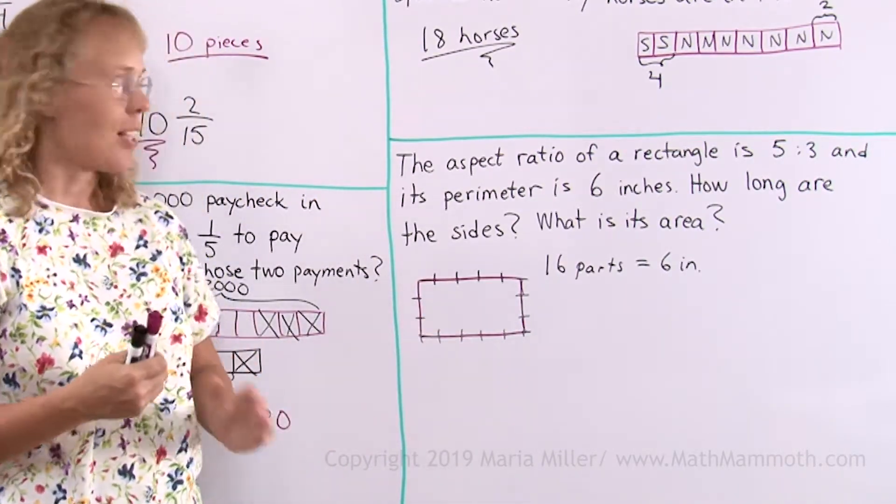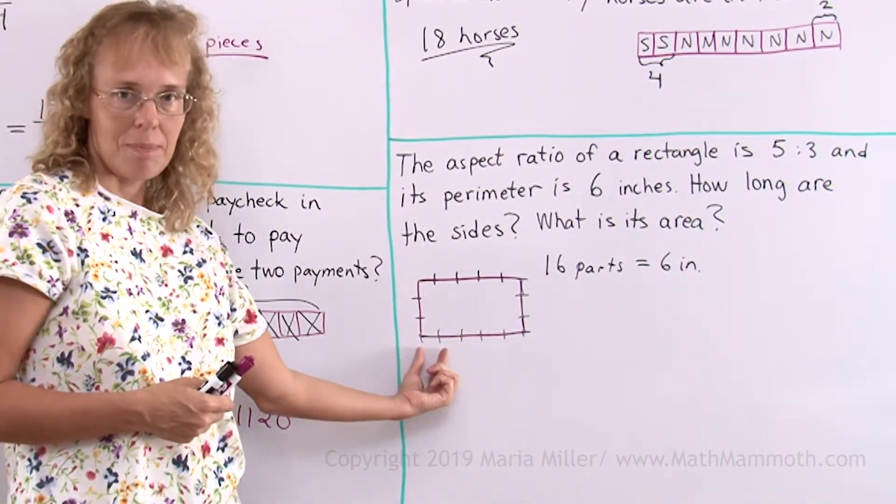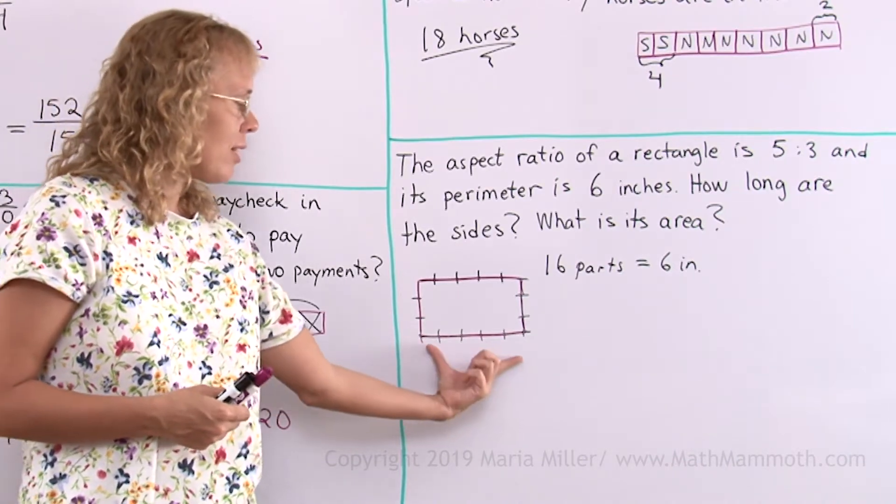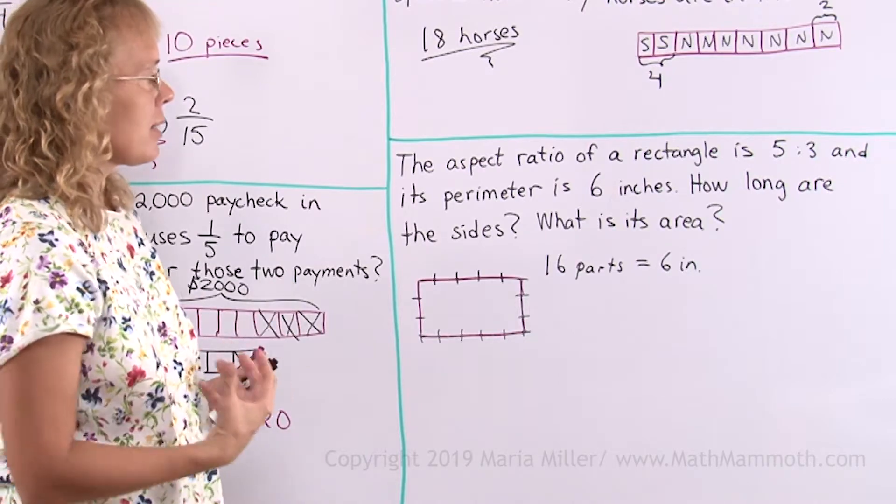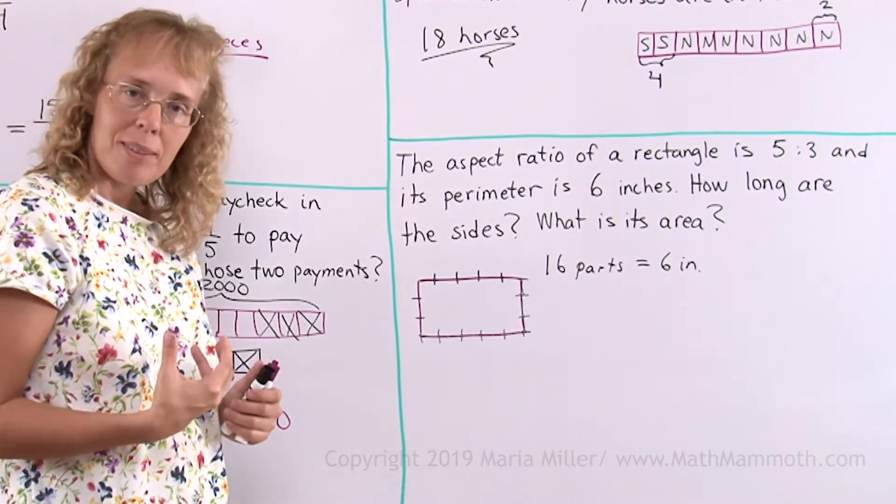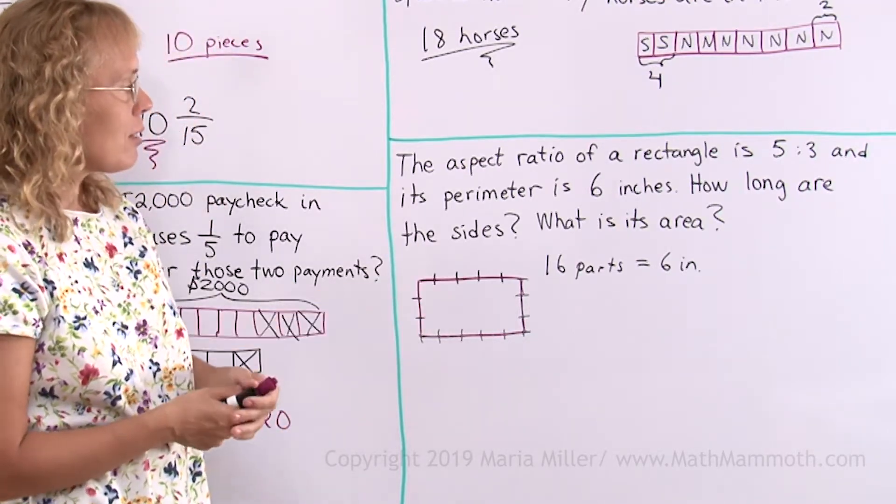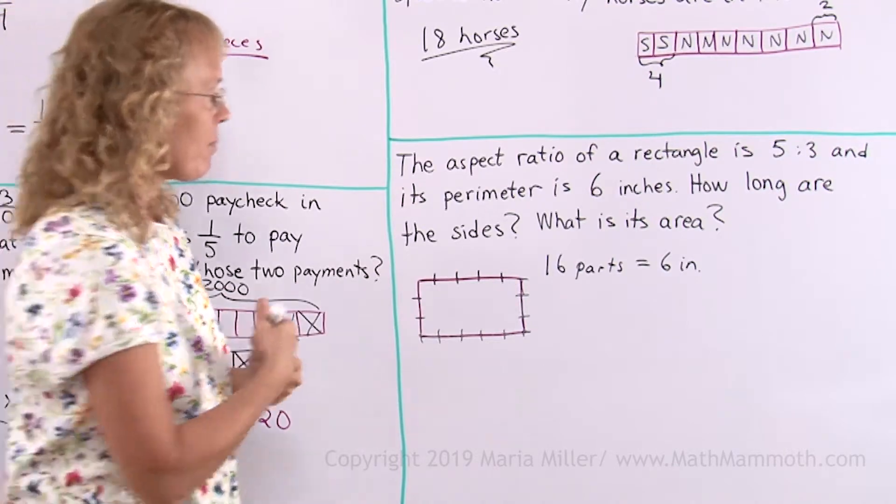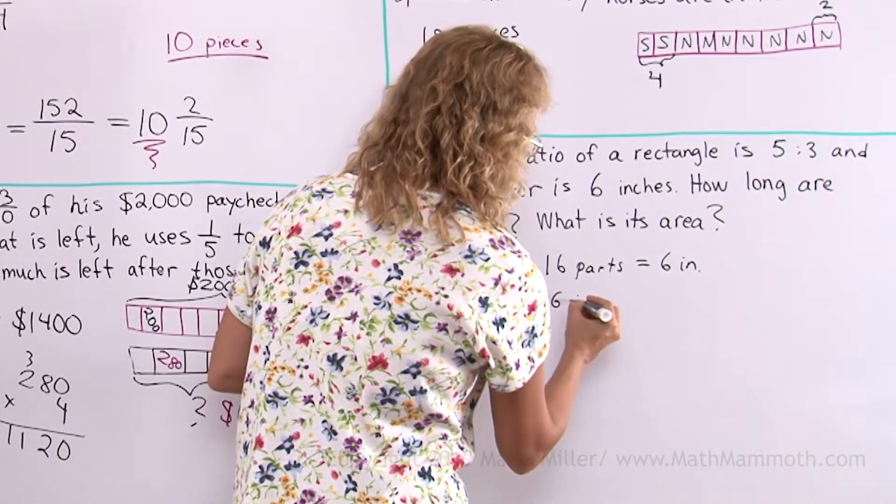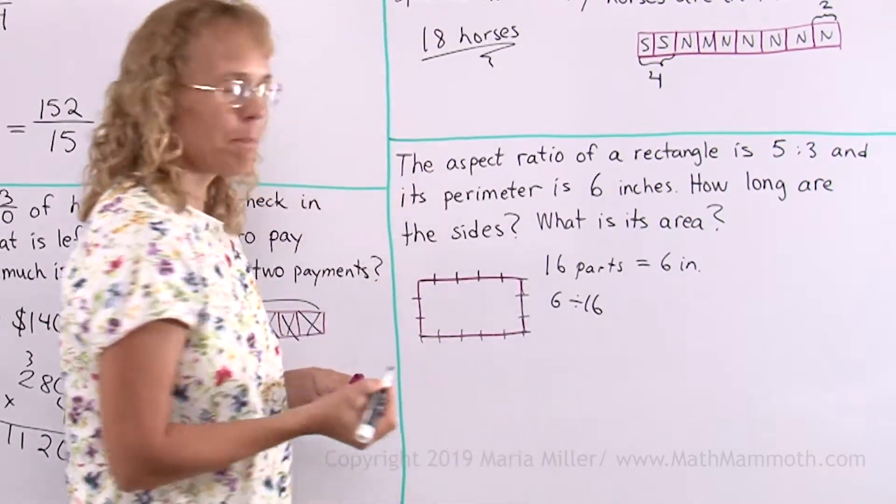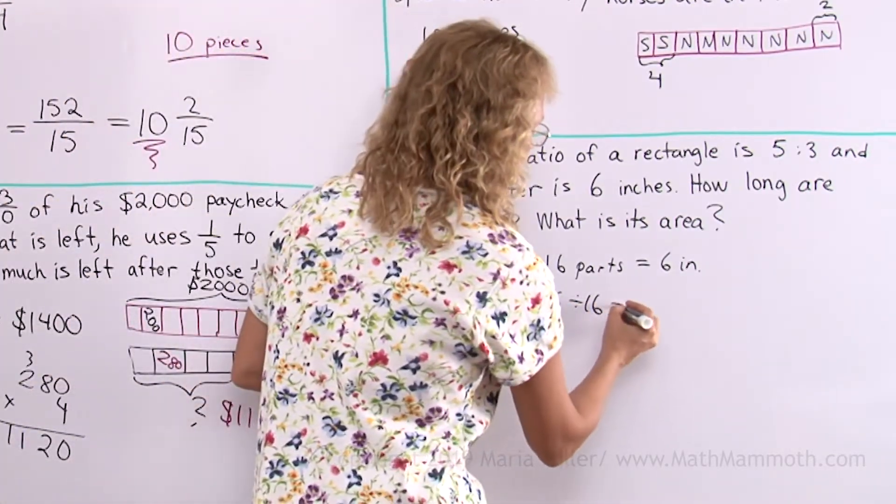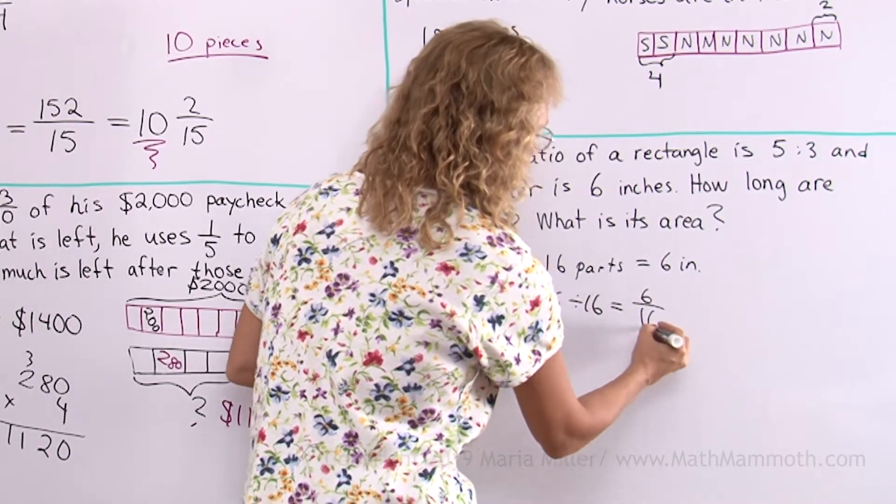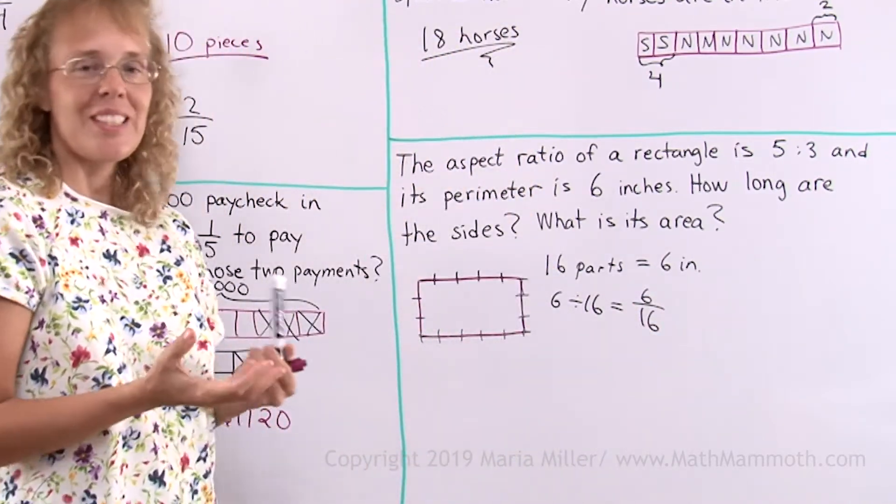This now lets us find how much is one of these parts. After that, we can easily then find out the whole side lengths. If 16 parts is 6 inches, then how much is one part? That's like an equation there, we divide by 16. So I need to find out how much is 6 divided by 16. Now let me write this using the fraction line as my division symbol. And I have the answer, 6 sixteenths.